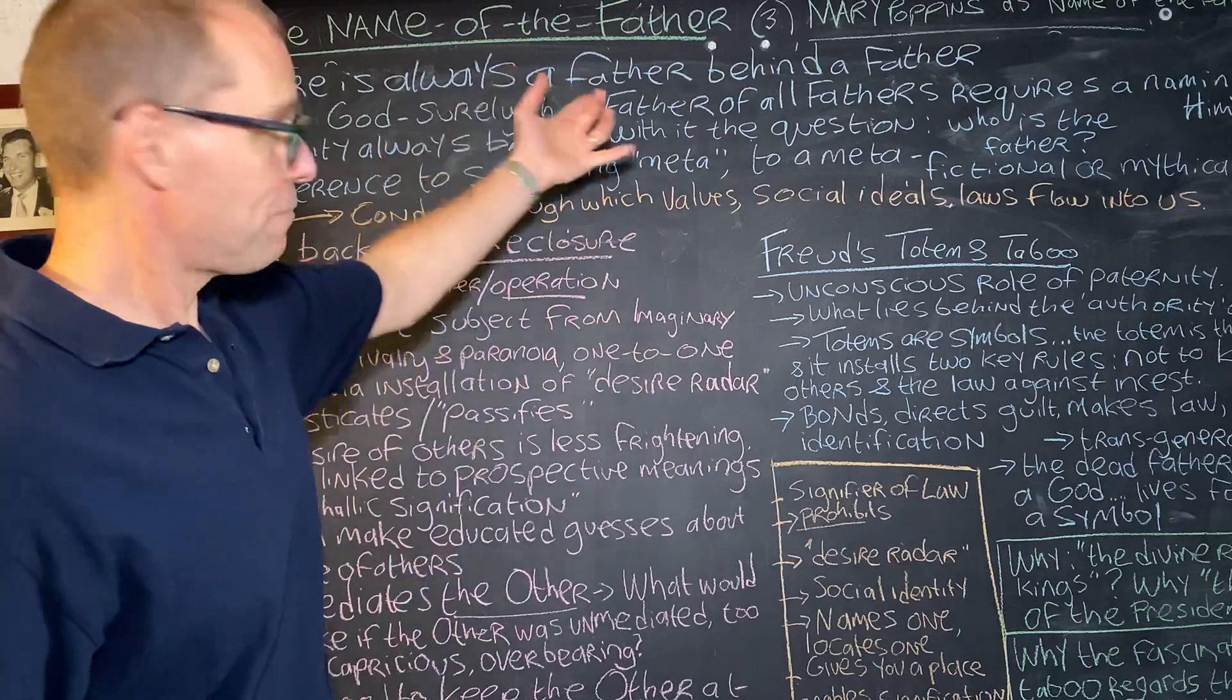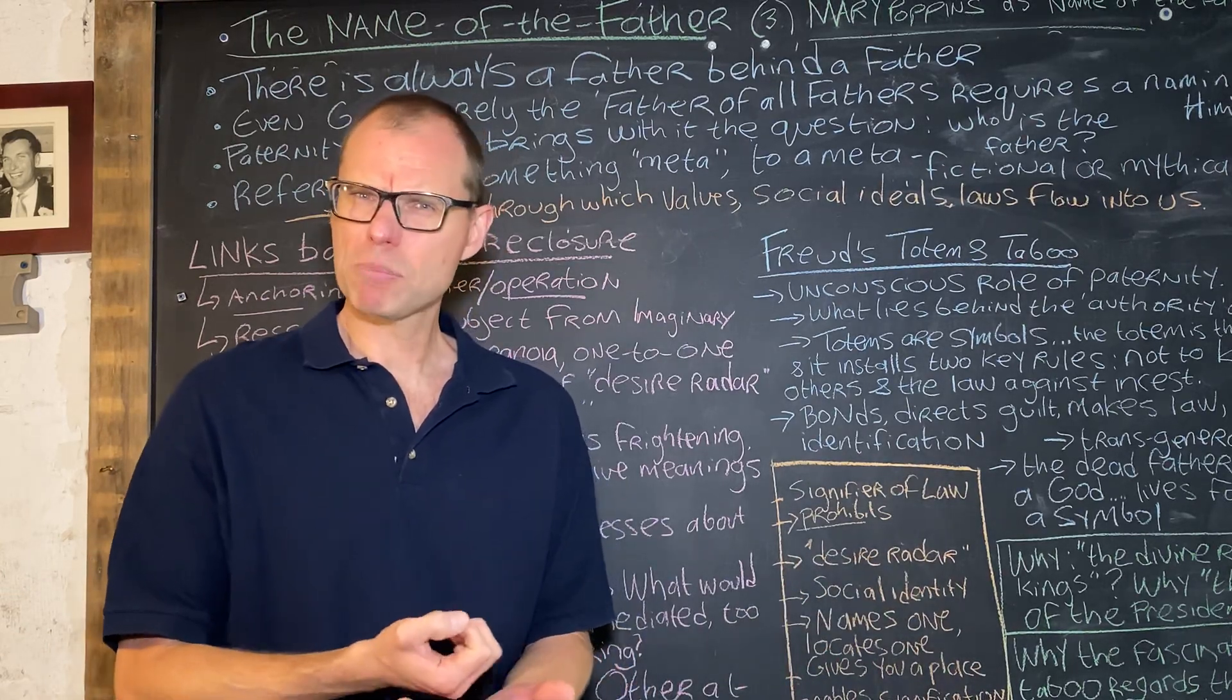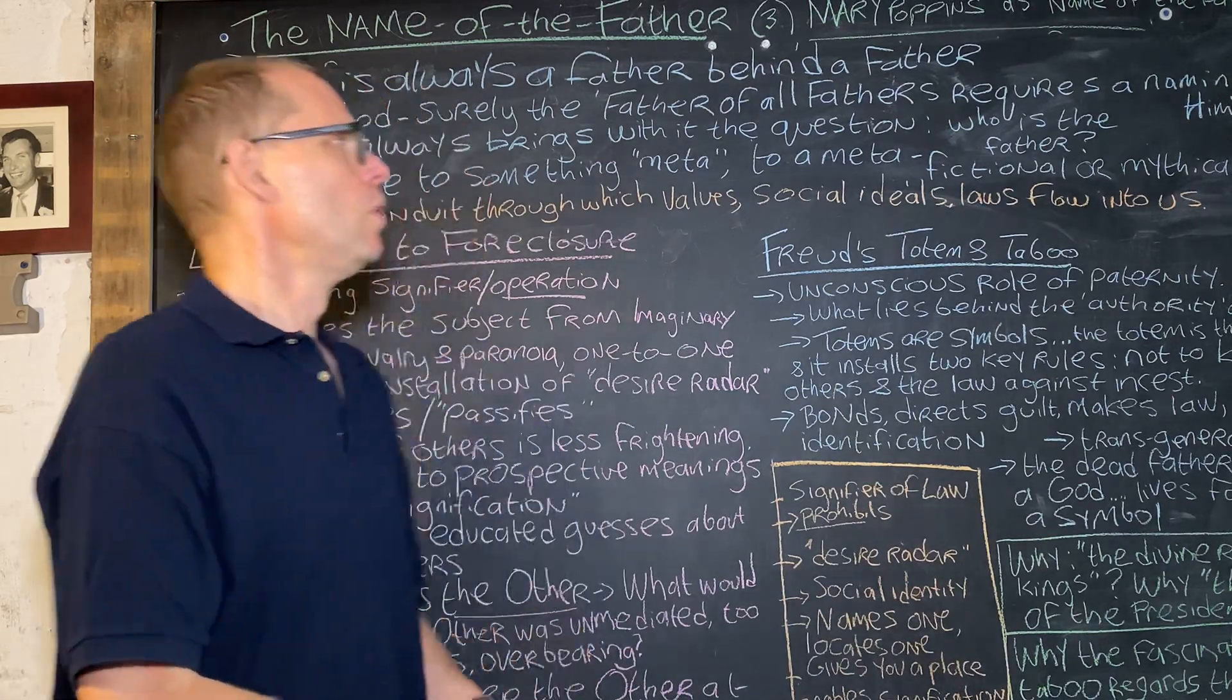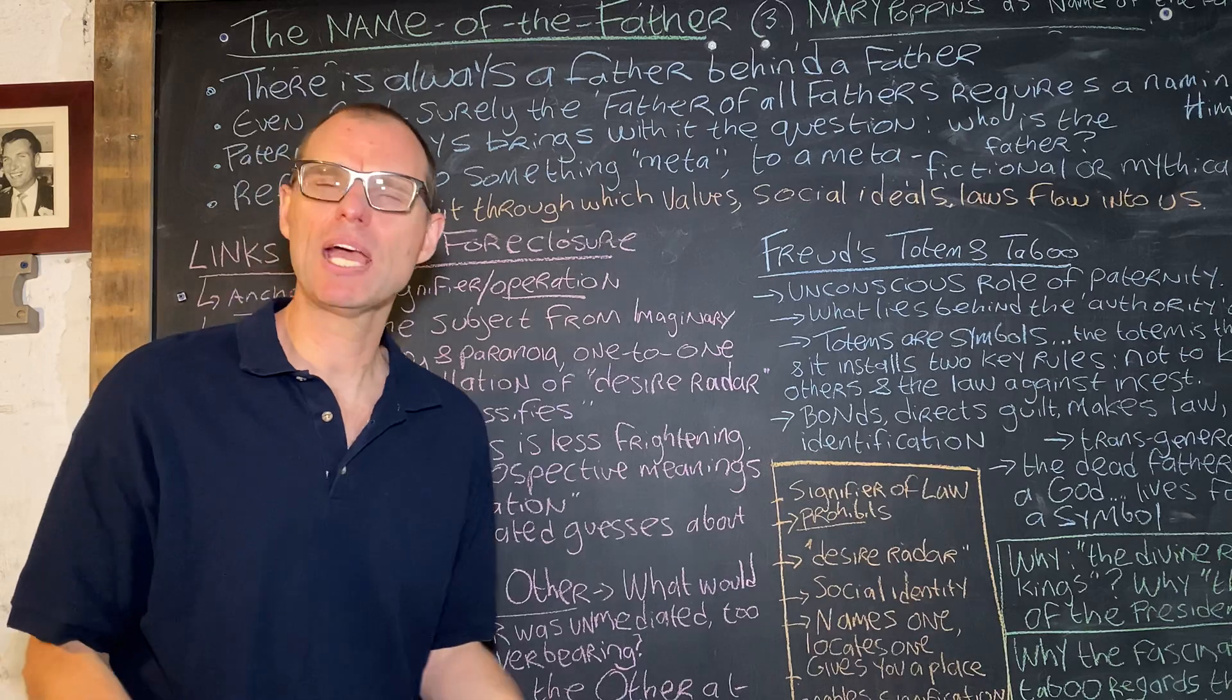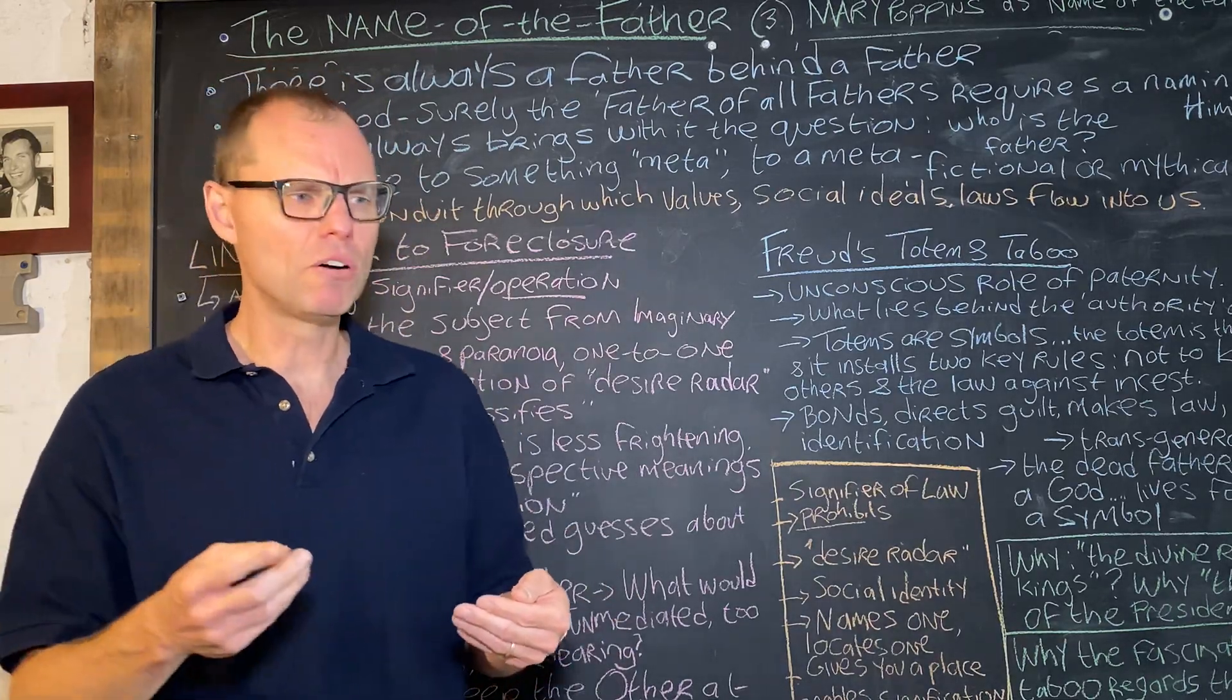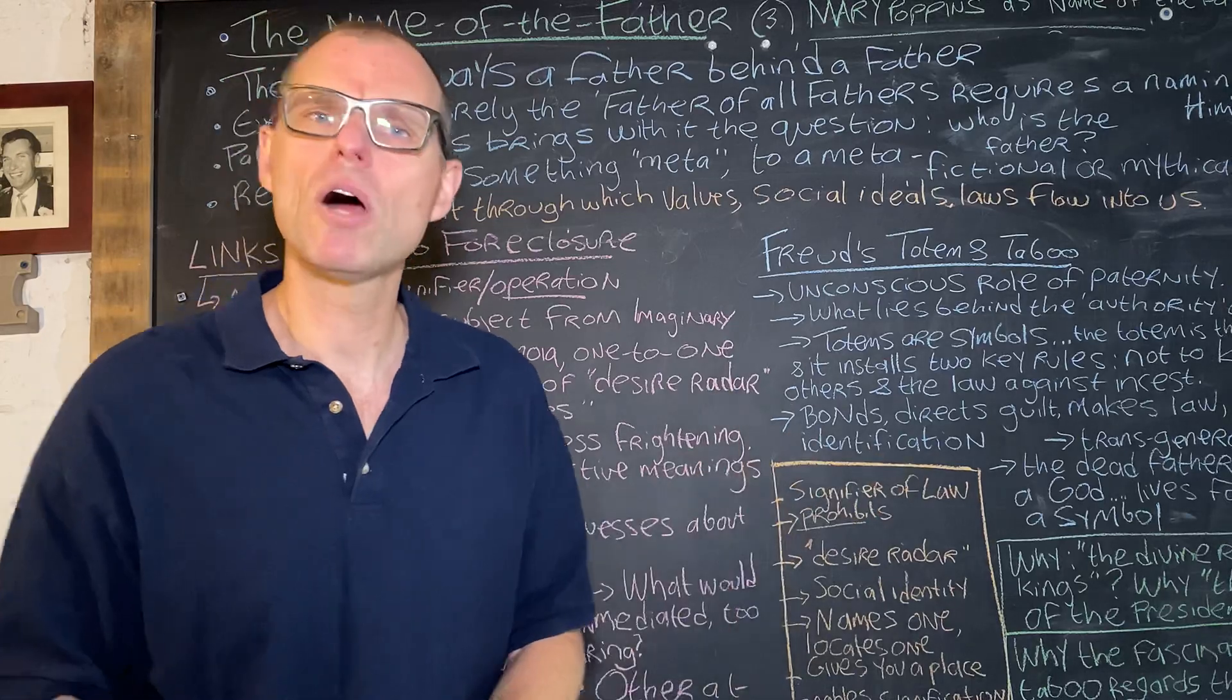I also wanted to throw out a couple of questions which link us back to some of our earlier statements. There's always a father behind a father. I stressed before that there seems to be a generational or intergenerational quality to this discussion of fathers and primal fathers. But let's just make that point again: there's always a father behind a father, which seems to suggest that maybe part of the apparent authority that seems to have been invested in fathers, at least within patriarchy, requires the dimension of history. I also wanted to note: even God, who's surely the father of all fathers, seems to require a naming beyond himself.